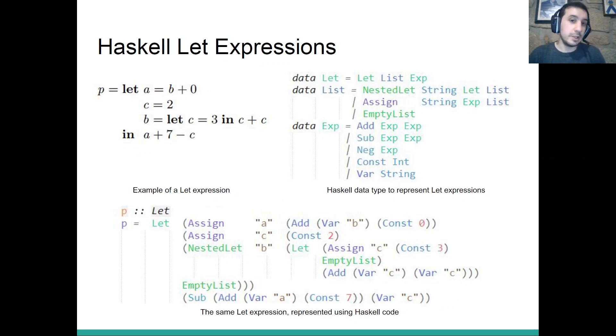Our running example in this presentation will be Haskell let expressions. Not necessarily only Haskell, but Haskell implements this type of let expressions. We can have, for example, nested let expressions. Here we have a let expression inside a let expression. We can have out-of-order declarations. For example, here we use b, which is only declared later on in the same scope.